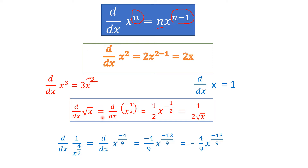For the derivative of 1/x^(4/9), first rewrite it as x^(−4/9). Applying the power rule, bring −4/9 to the beginning: (−4/9)·x^(−4/9 − 1) = (−4/9)·x^(−13/9). So the answer is −(4/9)·x^(−13/9).